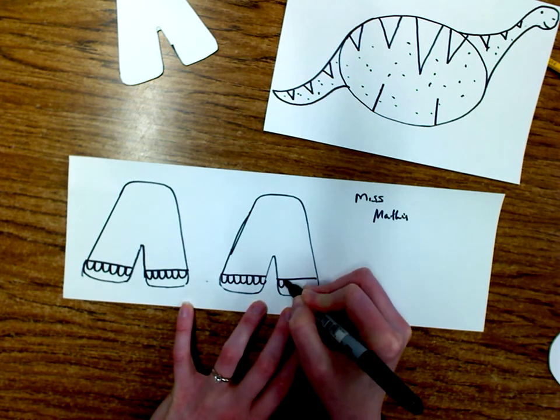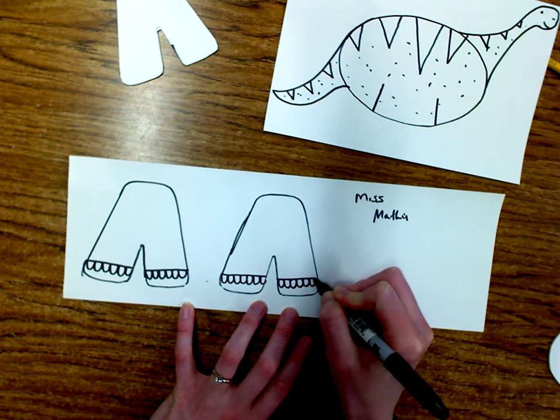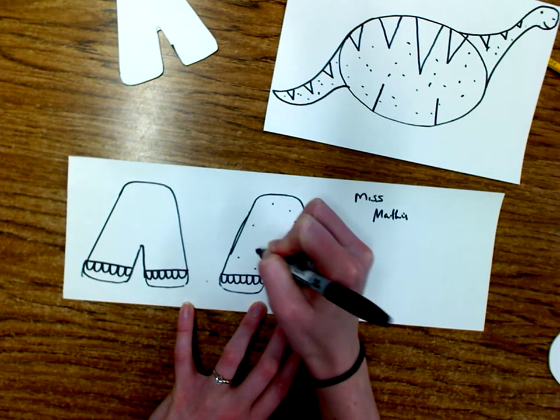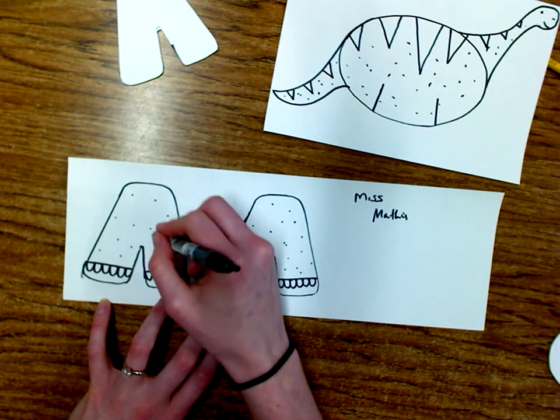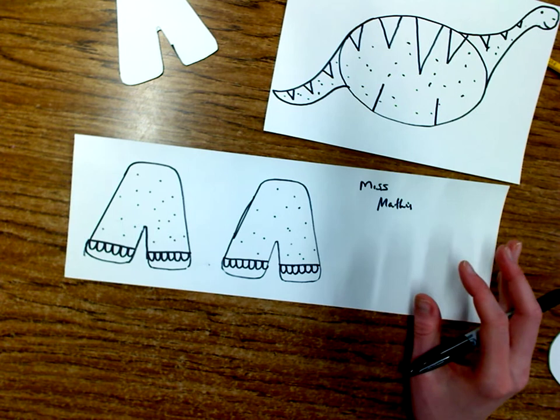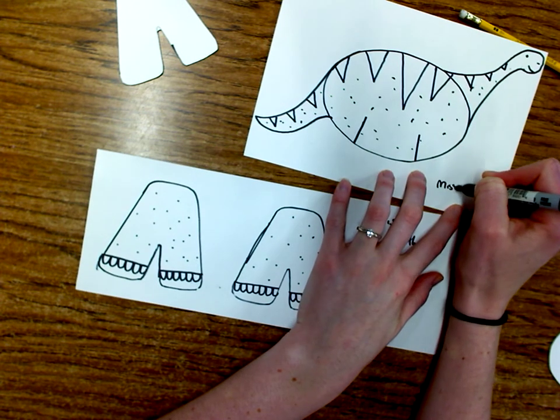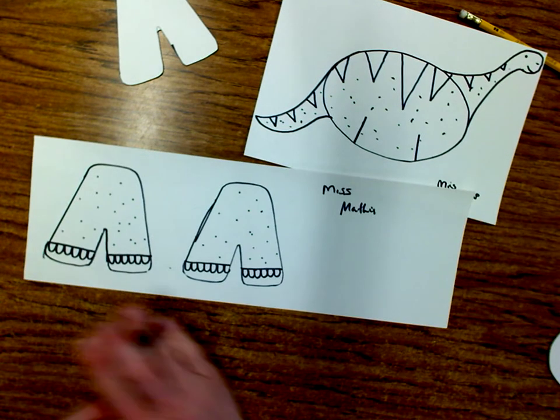Maybe it's gonna have stripes or different things like that. Okay, so that's our first step. Once I have this fully finished we're gonna go ahead and we're going to color it. You can use any colors you want to. It doesn't have to look like any kind of dinosaur you've ever seen before, but those are our first steps.